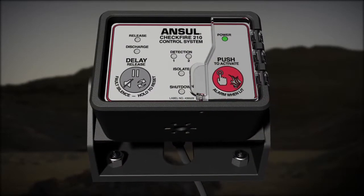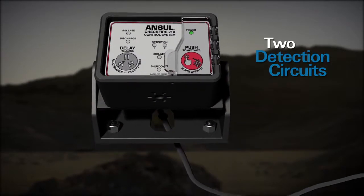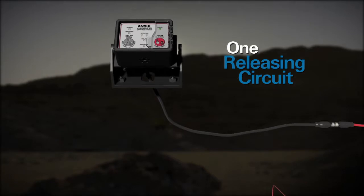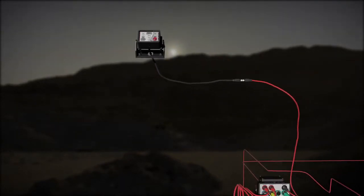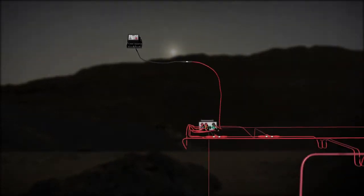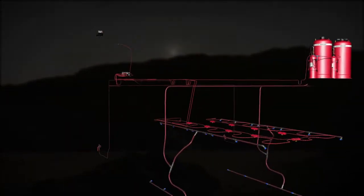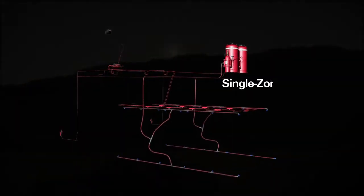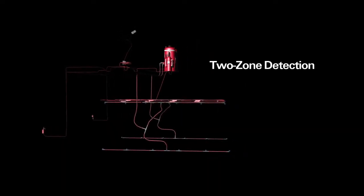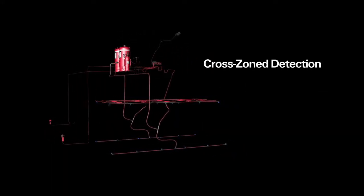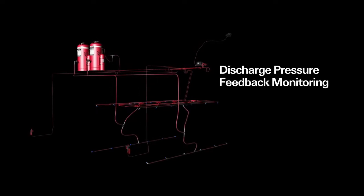The CheckFire 210 system features two detection circuits and one releasing circuit to provide a fully supervised electronic detection and actuation system. The detection circuits are configurable for various options, including single-zone detection, two-zone detection, cross-zone detection, discharge pressure feedback monitoring, or alarm only.